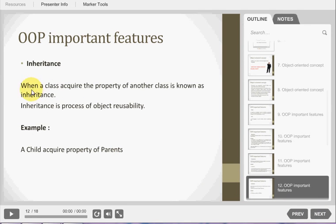Inheritance. When the class acquires the property of another class, it is known as inheritance. Example is the child acquires the property of parent. So we can say that inheritance is a process of object reusability.